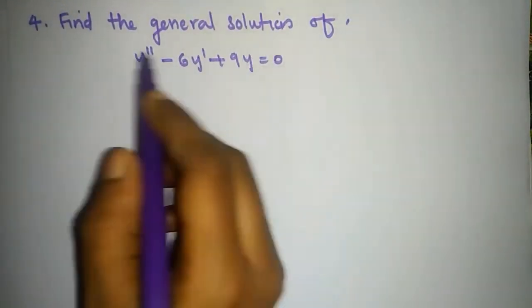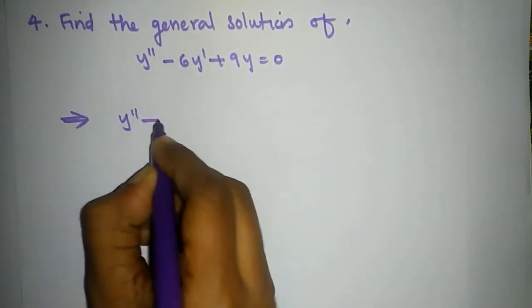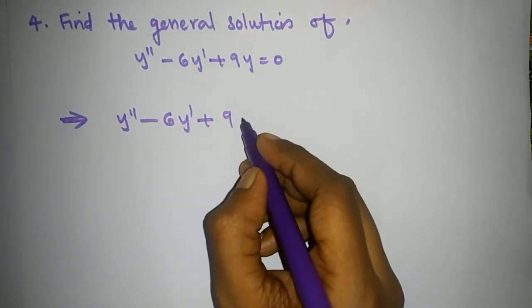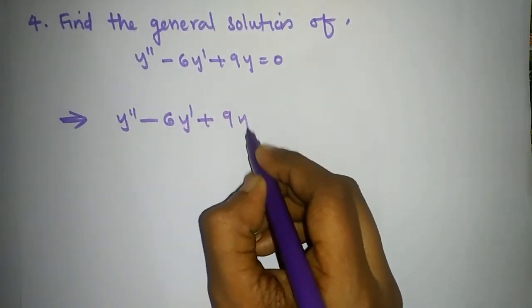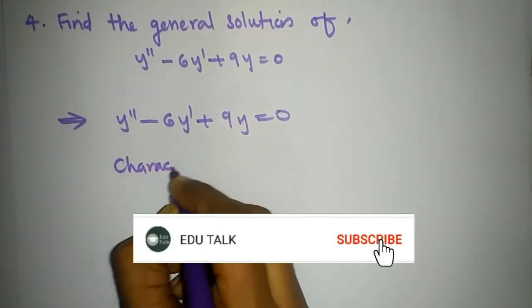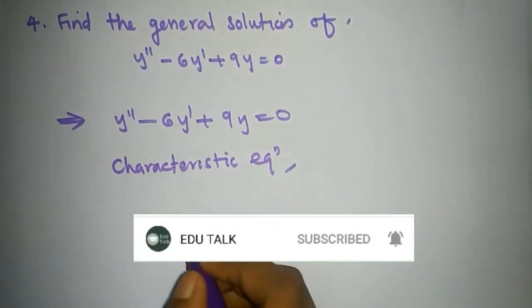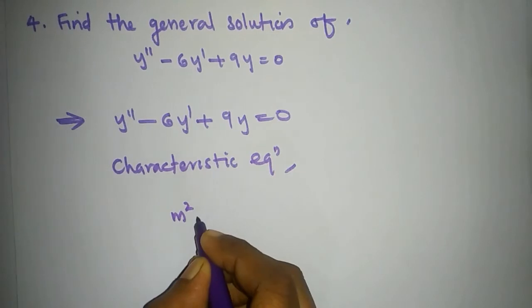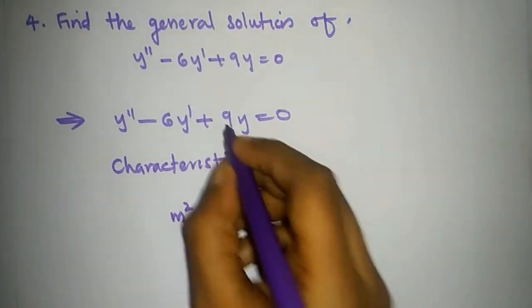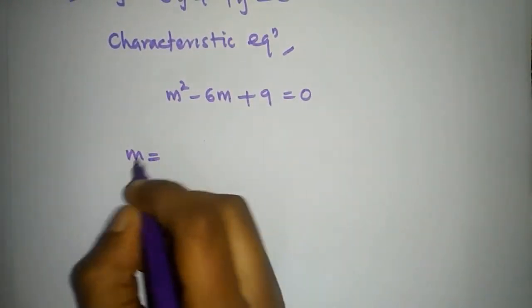The next problem is: find the general solution of 5y'' minus 6y' plus 9y equal to 0. Let's take the characteristic equation.